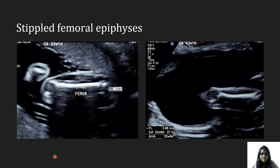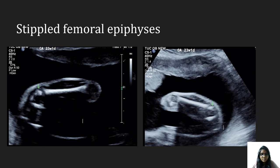Here we can see the stippling of the femoral epiphysis. The green arrows are representing stippling of the femoral epiphysis. Stippling means focal bony calcifications which appear dot-like.